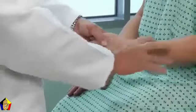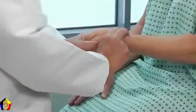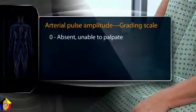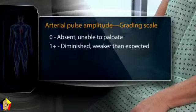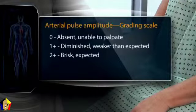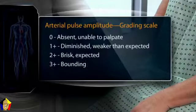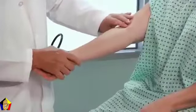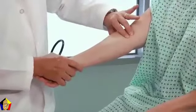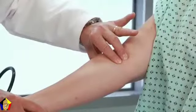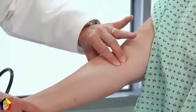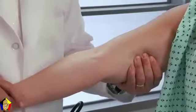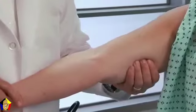Compare the pulses in both arms and grade the amplitude. A grade of 0 indicates a pulse that is absent and not palpable. A grade of 1+ indicates a pulse that is diminished, weaker than expected. A grade of 2+ indicates a brisk or normal pulse. A grade of 3+ indicates bounding, with possible aortic insufficiency. If you suspect arterial insufficiency, palpate the brachial pulse by flexing the patient's elbow slightly and palpating the artery just medial to the biceps tendon at the antecubital crease. The brachial artery can also be felt higher in the arm, in the groove between the biceps and triceps muscles.